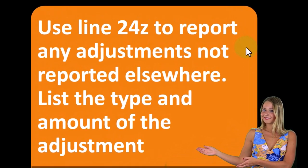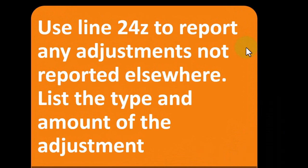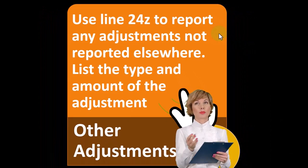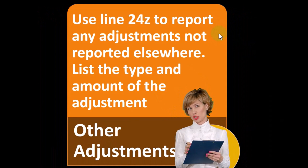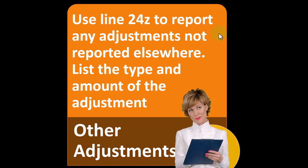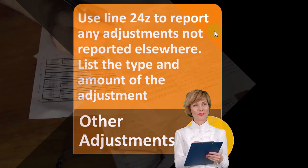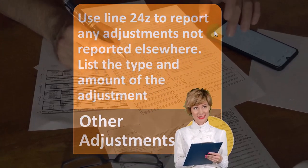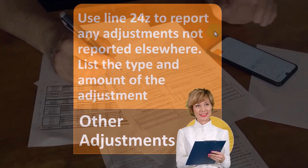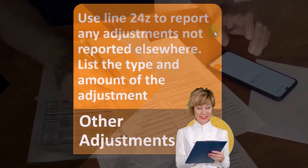For other adjustments, use line 24z to report any adjustments not reported elsewhere — list the type and amount of the adjustment. If there are any other kinds of adjustments in that category, they'll go in the other adjustments section on Schedule 1. Next time we'll take a look at plugging this into the tax software, which might help wrap our heads around this a little bit more clearly.